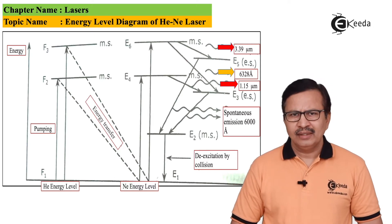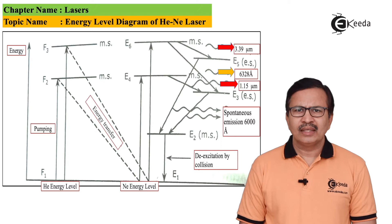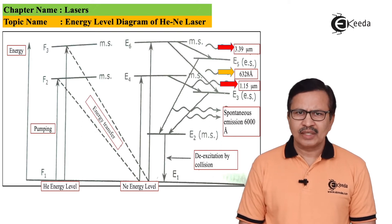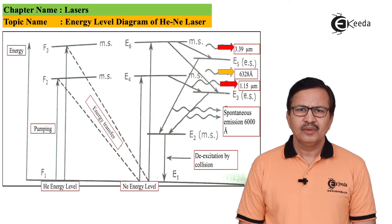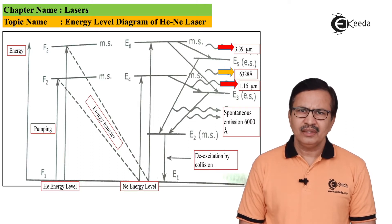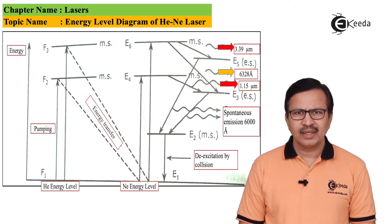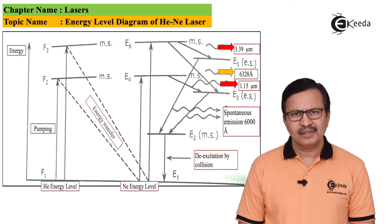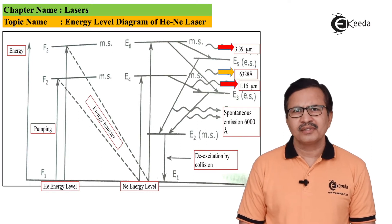On the neon side we have the energy levels marked as E1 which is the ground state, E2 which is an excited state, E3 which is an excited state, E4 which is a metastable state, E5 which is an excited state, and finally E6 which is a metastable state.